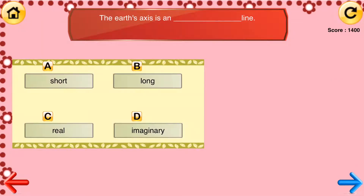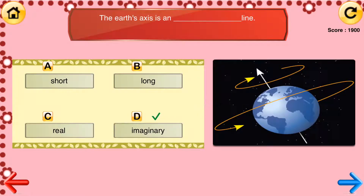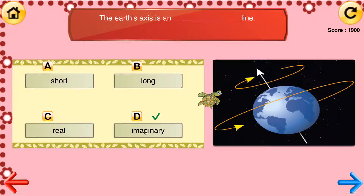Quiz question: The earth's axis is a blank line. The answer choices are short, long, real, and imaginary. The correct answer is imaginary.